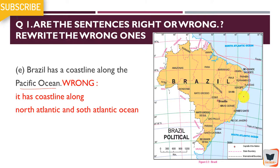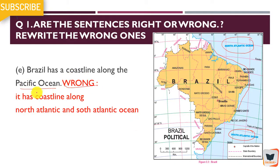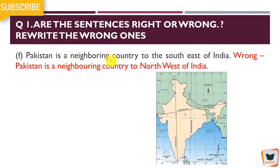Brazil has a coastline along the Pacific Ocean. A coastline is the line that separates land from a water body. Looking at the map, Brazil's coastline is along the North Atlantic Ocean and the South Atlantic Ocean — not the Pacific Ocean. So this statement is wrong. You have to correct it: Brazil has a coastline along the North Atlantic Ocean and South Atlantic Ocean.